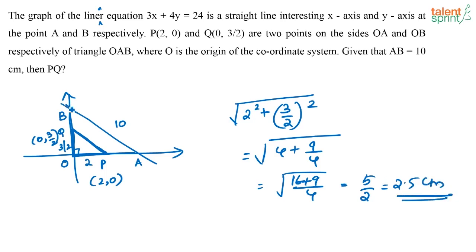To actually solve this question you don't even need this information. You have two points P and Q. Their coordinates are given. You just have to find out the length of PQ. This is a right angle triangle. Your answer is 2.5 centimeters.